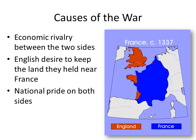Here are some causes of the war. First, you've got economic rivalry between England and France — they both were jockeying for position for supremacy in medieval Europe and wanted to have stronger trade than the other. There was also an English desire to keep the land they held on mainland Europe. England was not just the island of Great Britain in 1337; they also had holdings along the coast in France, the Port of Calais, and some areas on the western coast. The French thought they had a right to control that land and wanted England out of what they considered their territory.